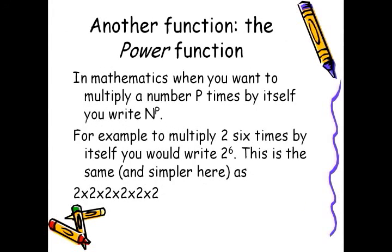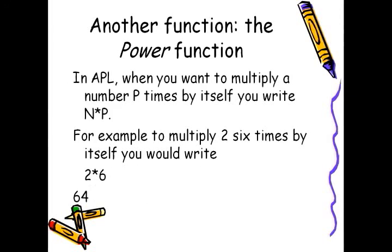Here's another function: the power function. In math, when you want to multiply a number p times by itself, you write n exponent p. For example, if you want to multiply two six times by itself, you write 2 exponent 6 — the same as 2 times 2 times 2 times 2 times 2 times 2. In APL, you write n star p. For example, if you want to multiply two six times by itself, you write 2 star 6.